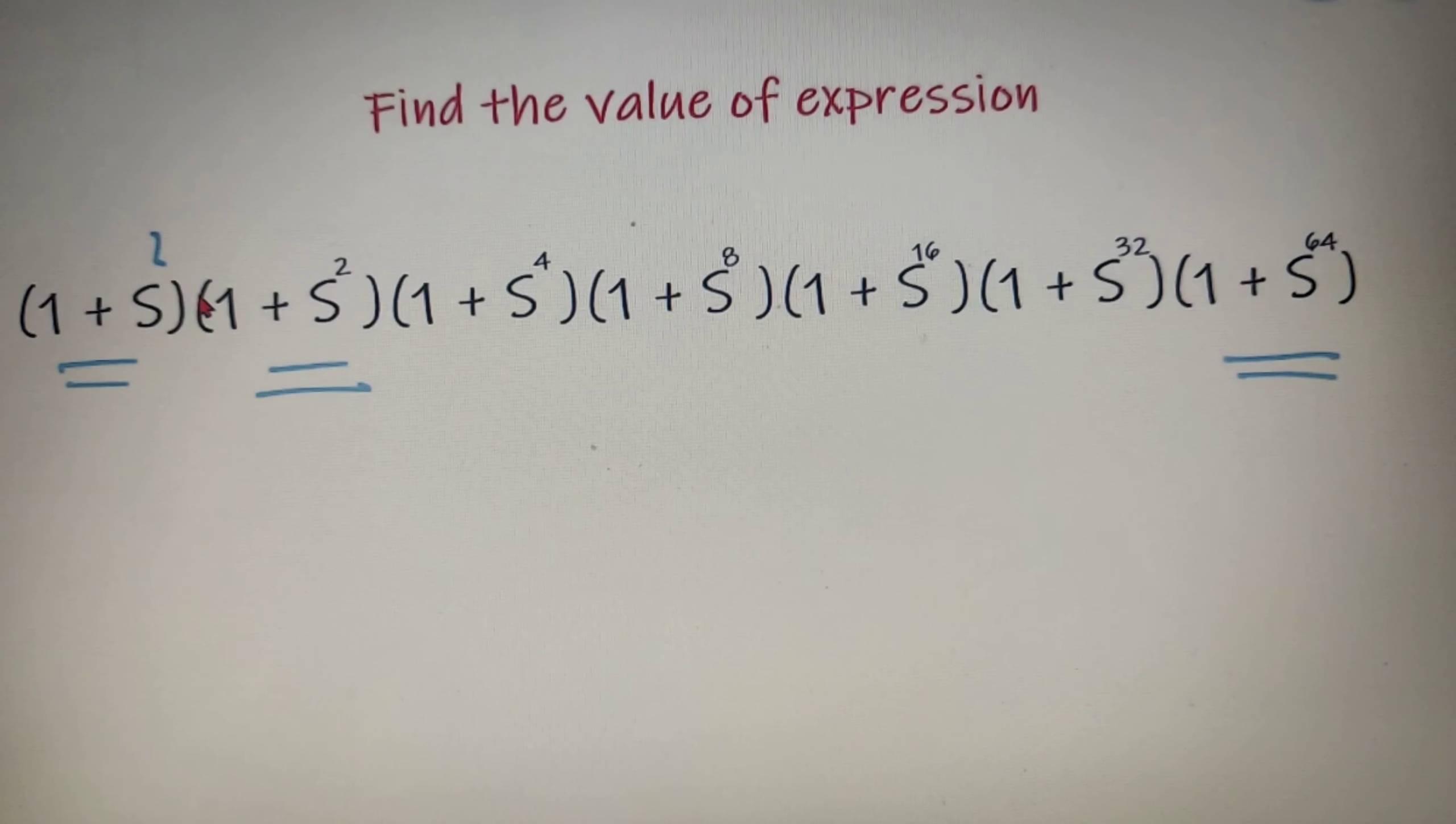If I multiply and divide (1 + s) by (1 - s), I will get (1 - s²) because (1 + s)(1 - s) = (1 - s²). I got this by using the formula (a + b)(a - b) = a² - b², where a is 1 and b is s.